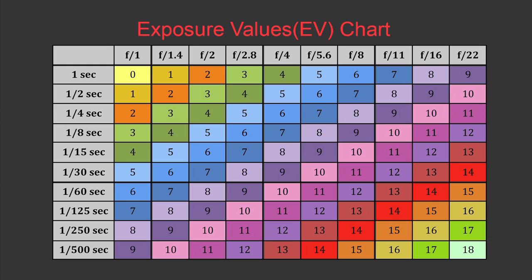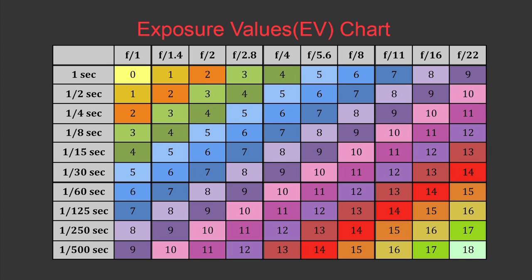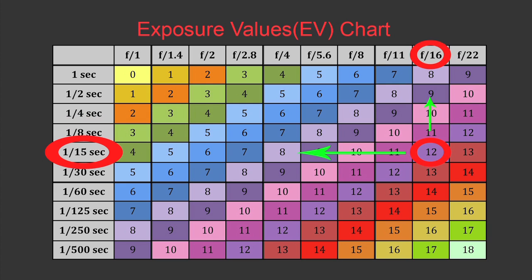This is another chart I'd like to share with you — it's called the Exposure Values chart. This chart will help you determine the exposure in different conditions and the exposure combinations for those conditions. The way it works: you choose a condition that fits your scene. For example, let's say we choose number 12, which is a daylight scene under heavy cloud with no shadows. We go back to our chart and look for number 12, which is shown in purple.